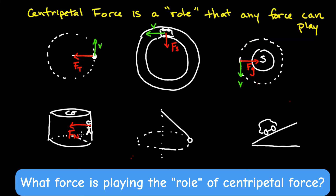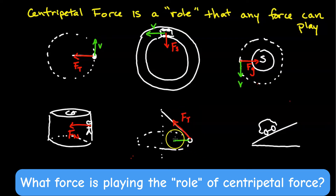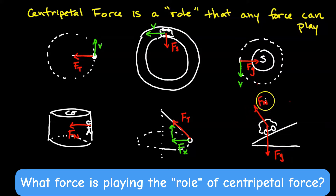For a string swinging a ball at an angle — like in the flying pig lab — the centripetal force is played by the horizontal component of tension, not the full tension. Similarly, for a car on a banked turn, there is a gravitational force and a normal force, but the centripetal force is provided by the horizontal component of the normal force.